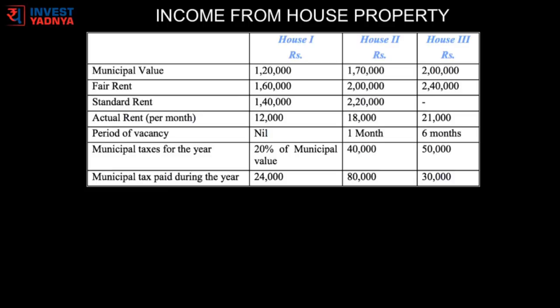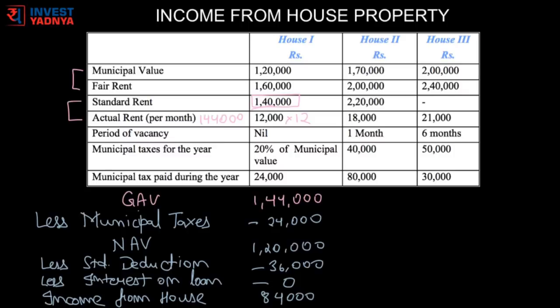Let's understand all this with some examples. We are taking the same scenarios as mentioned on the income tax website. In the first scenario, rent is the higher of fair rent and municipal value but with a maximum limit of standard rent. But actual rent is Rs 1,44,000, which is more than the standard rent and hence will be taken as gross annual value. Municipal taxes are deducted and hence net annual value is calculated. Now a standard deduction of 30% is deducted from this, and assuming no home loan is taken, income from house property will be the resulting amount.